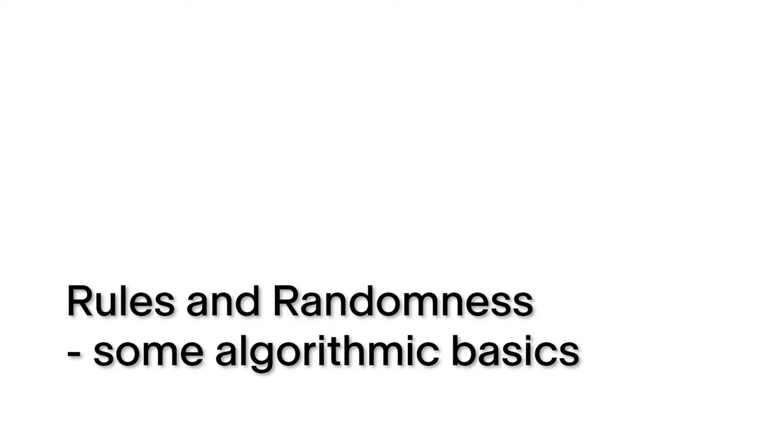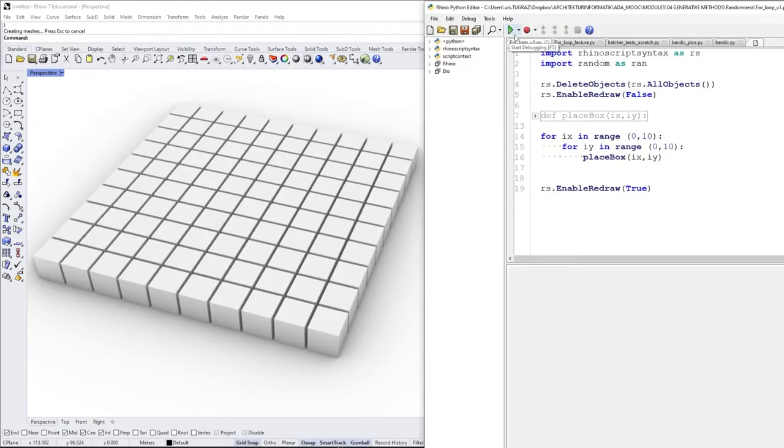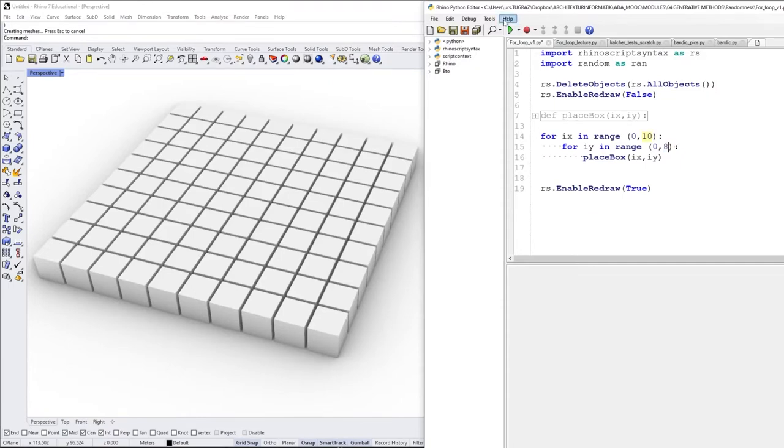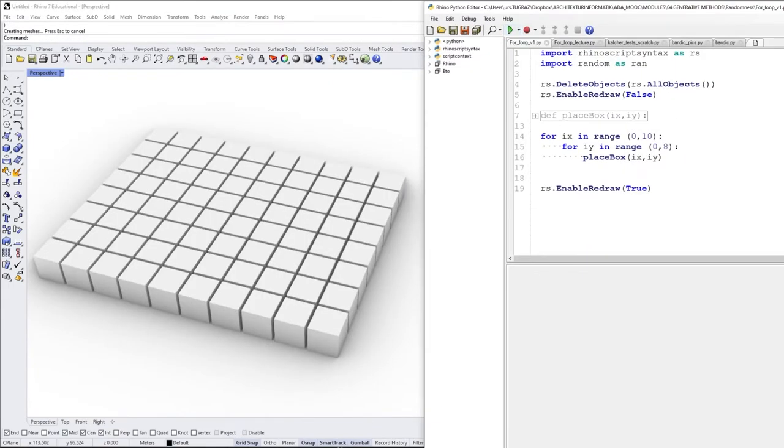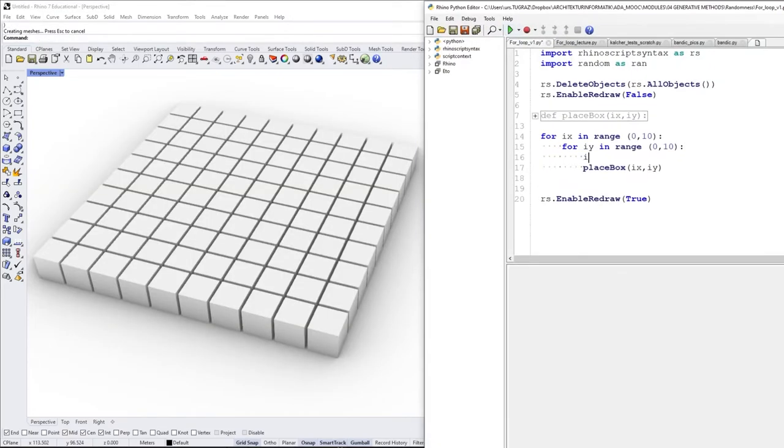We'll again start very simply by looking at what rules can look like when they're expressed in a programming language. So here's a bit of code. Two nested for loops written in Rhino-Python. You don't need to be able to read scripting code to understand that it's a very simple algorithm. In fact, it's basically an array command. It creates an array of boxes in X and Y dimension.